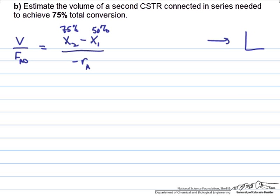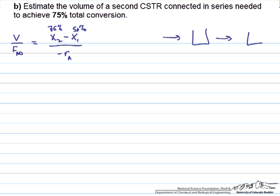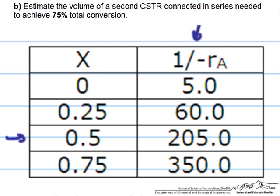Using this definition, I draw a very simple schematic of two CSTRs in series. Because we're basing our conversion values on the inlet conditions, we'll use the same FA0 we just had, which is 0.8 moles per second. The volume is of course what we want to solve for, and then the reciprocal reaction rate, 1 over negative rA, we have in the table.